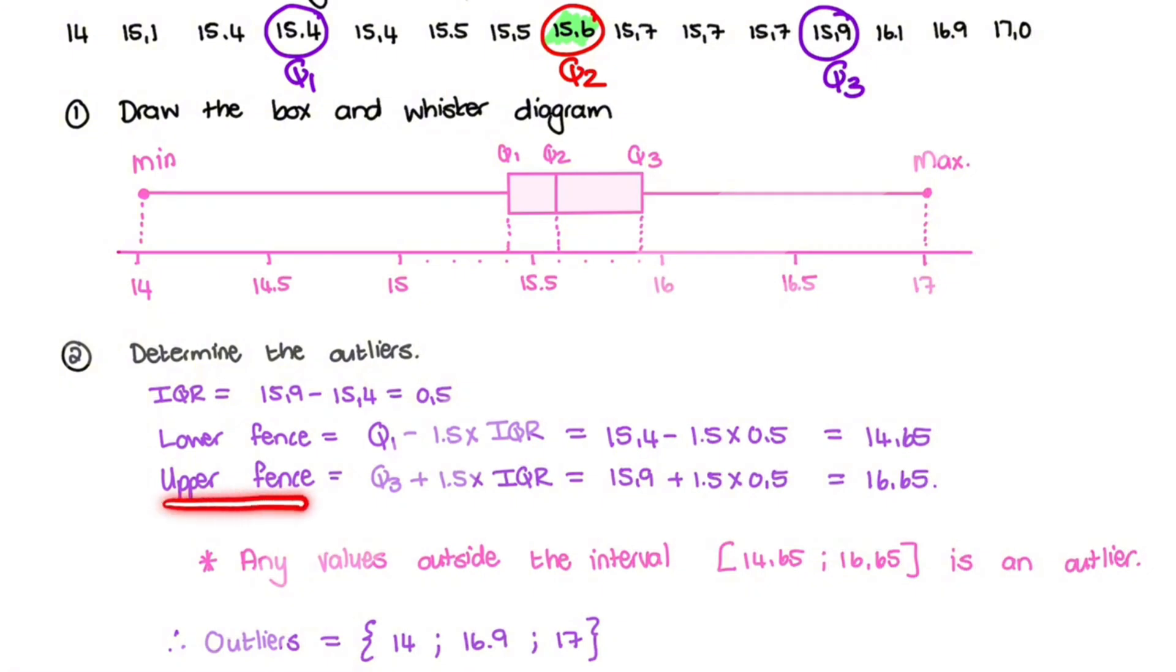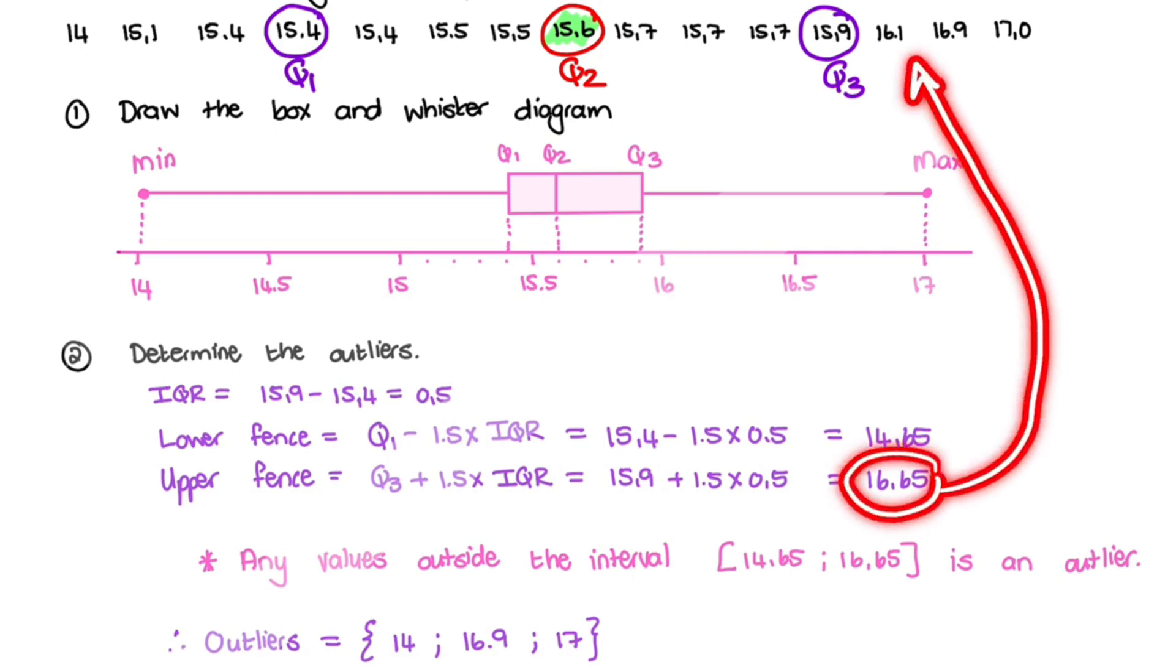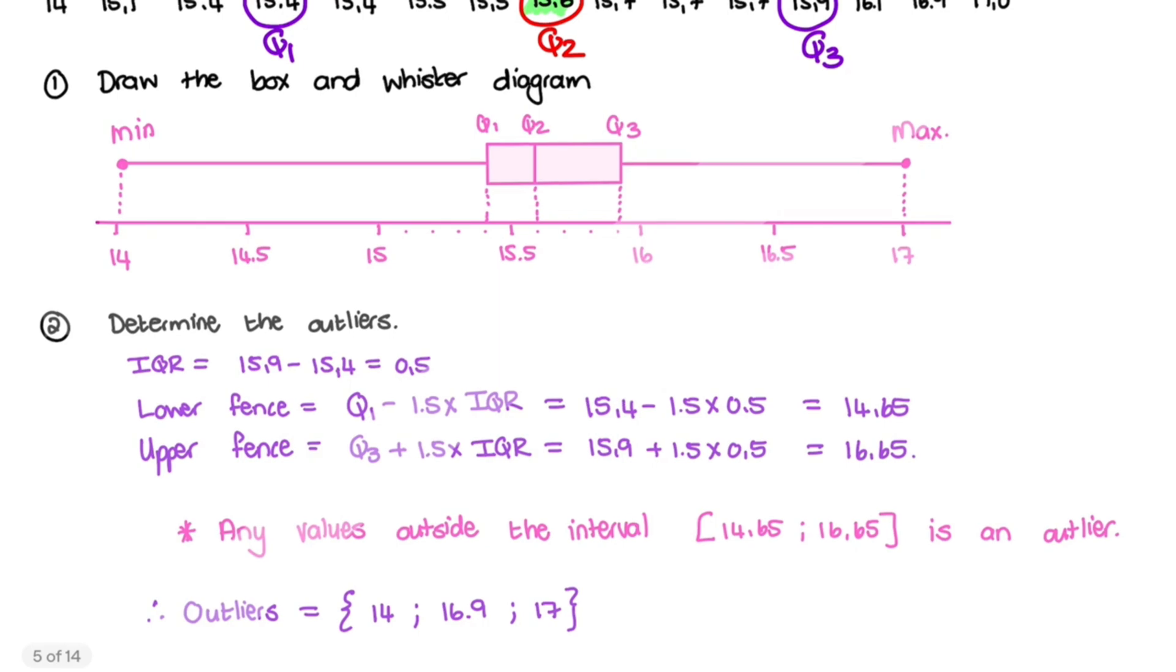Now we repeat that calculation for the upper fence, but instead of using quartile 1, we will use quartile 3. And we are adding now 1.5 times the IQR. So we have quartile 3 is 15.9, plus 1.5 times 0.5, and that is 16.65. Again, the 16.65 is not part of our data, it's a simple estimate where we will cut off values. So any values outside of this interval is considered an outlier.